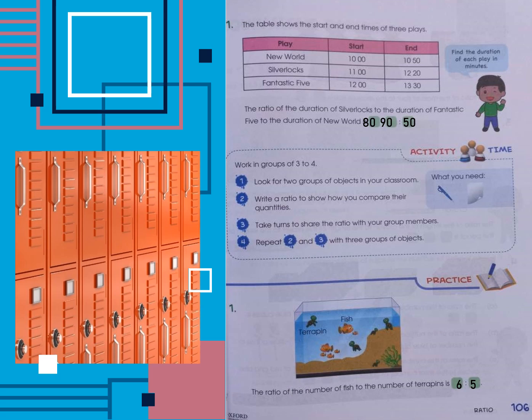In question eleven, a table shows the start and end times of three plays. The New Ball starts at 10:00 and ends at 10:50, so its duration is 50 minutes. Silver Lock starts at 11:00 and ends at 12:20, giving a duration of one hour 20 minutes, which equals 80 minutes. Fantastic 5 starts at 12:00 and ends at 13:30, which is one hour 30 minutes, equal to 90 minutes. The ratio of the duration of Silver Lock to Fantastic 5 to New Ball is 80 to 90 to 50.